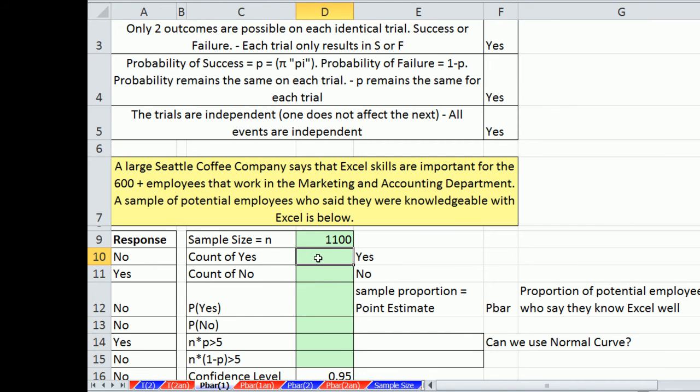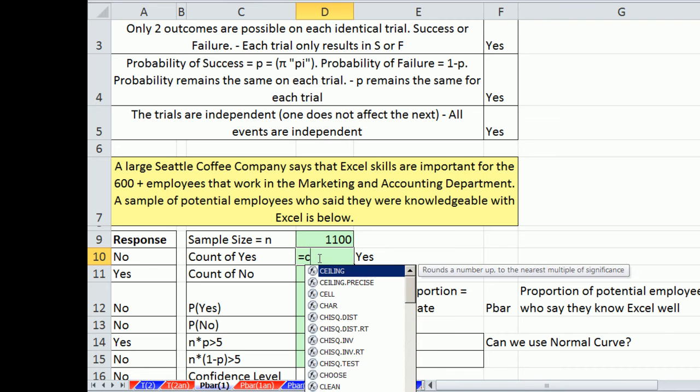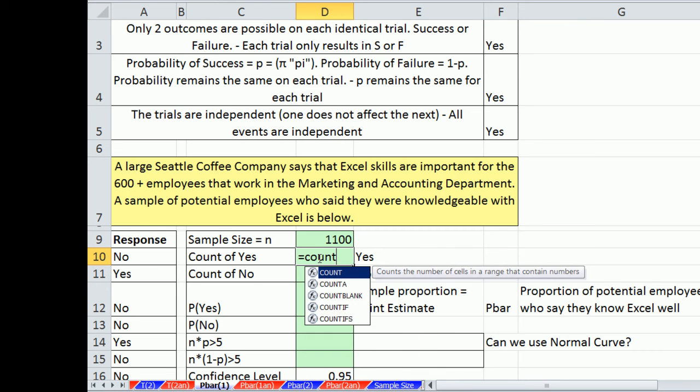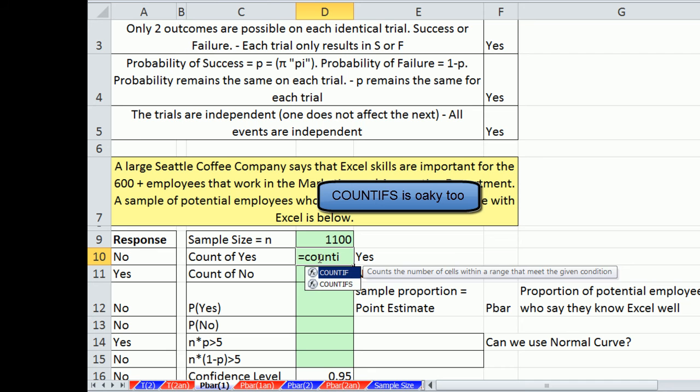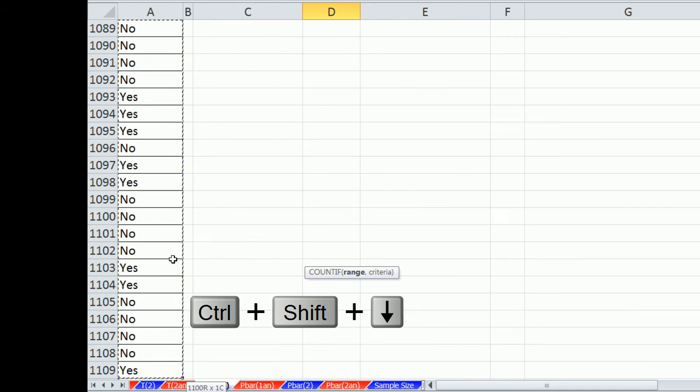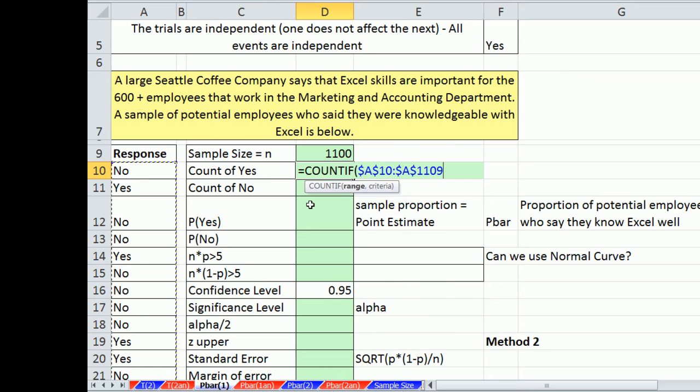All right, now we have to count yes and count no. Our success will be yes. We use the count if. So don't count all of them like count a did, but count only some of them. So we give it the range. Control-Shift down arrow, F4 to lock it. Notice the range, there it is, comma,